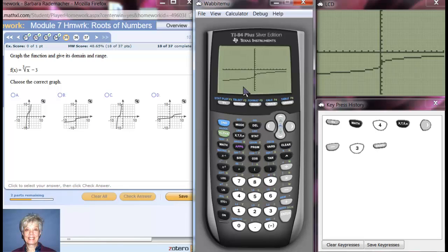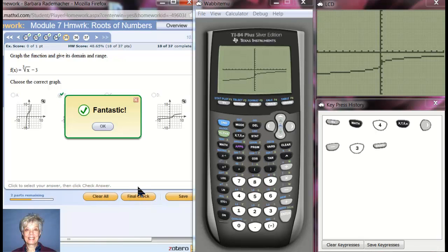Okay, this is the graph of the cube root of x minus 3, just brings it down 3 places. So this is the shape, the general shape of the cube root of x, and here it is right here. I'm going to say B. Fantastic.